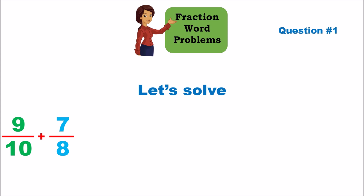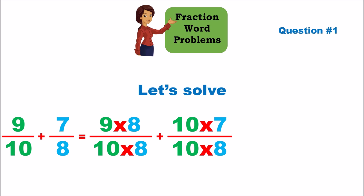Whatever you do to the denominator to make them the same, you also have to do to the numerator — and you're limited to multiplication and division only; you cannot add or subtract to make denominators the same. We can use 80 as a common denominator. For nine-tenths, multiply numerator and denominator by 8, giving 72 over 80. For seven-eighths, multiply by 10, giving 70 over 80.